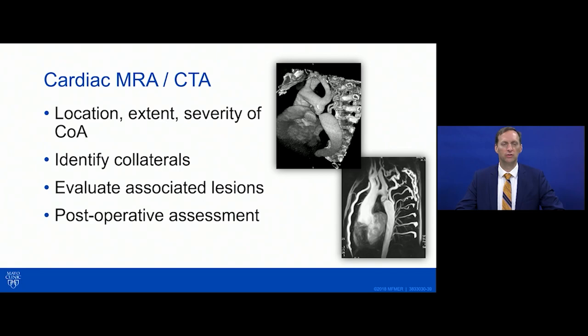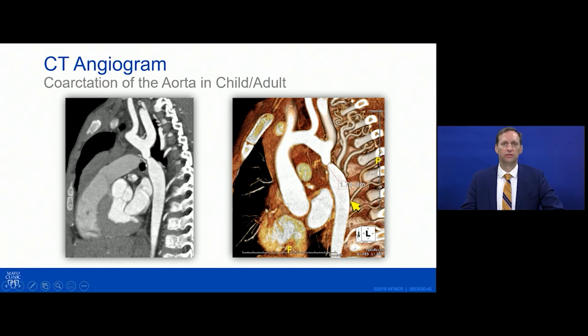Here's another CT angiogram — an approximately 11-year-old child with a severe coarctation measuring about two millimeters, with large intercostal and vertebral arteries acting as collaterals to the descending aorta.